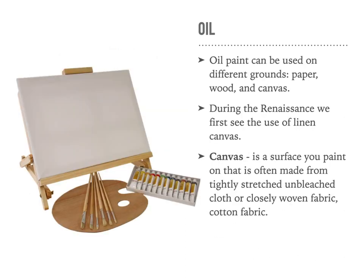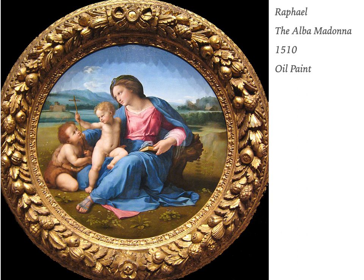Oil paint can be used on different grounds — paper, wood — but is normally used on canvas. During the Renaissance we see the first use of linen canvas. Canvas is a surface you paint on that is often made from tightly stretched unbleached cloth or closely woven cotton fabric. Here's a classic Raphael — the Alba Madonna from 1510, an oil painting. It's a tondo, as they call it — a circular canvas.